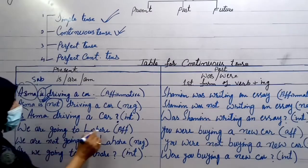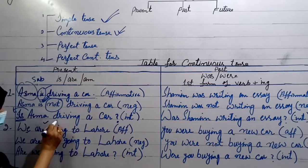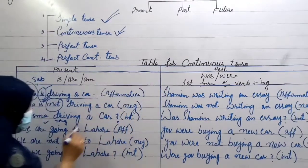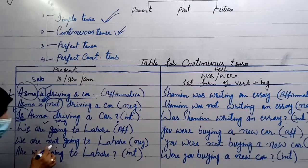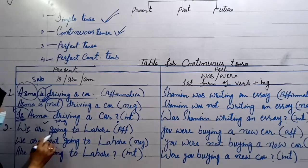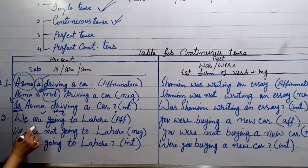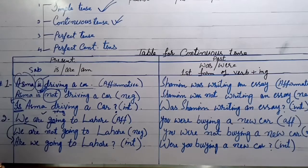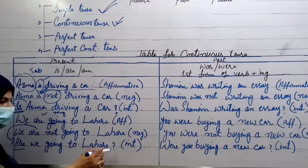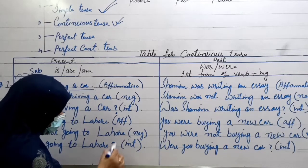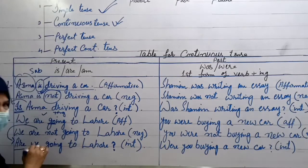Look at the next example. 'We are going to Lahore.' As usual: subject, then helping verb, then the base form of the verb — first form — plus I-N-G, then object. For negative: 'We are not going to Lahore' — put 'not' just after the auxiliary verb. For interrogative, the auxiliary verb comes at the beginning, before the subject: 'Are we going to Lahore?' with a question mark at the end. The question mark is very necessary for an interrogative sentence because it shows the sentence is interrogative.